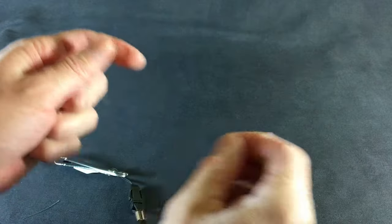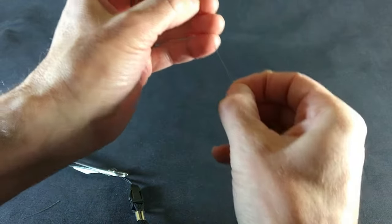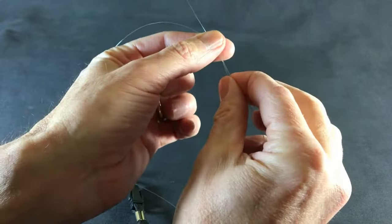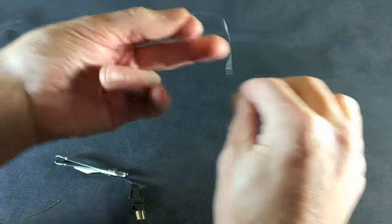So now we're going to do the double surgeon's knot or a triple. A lot of people use a triple. I've just gotten used to using a double. So double over your line. Form a loop.